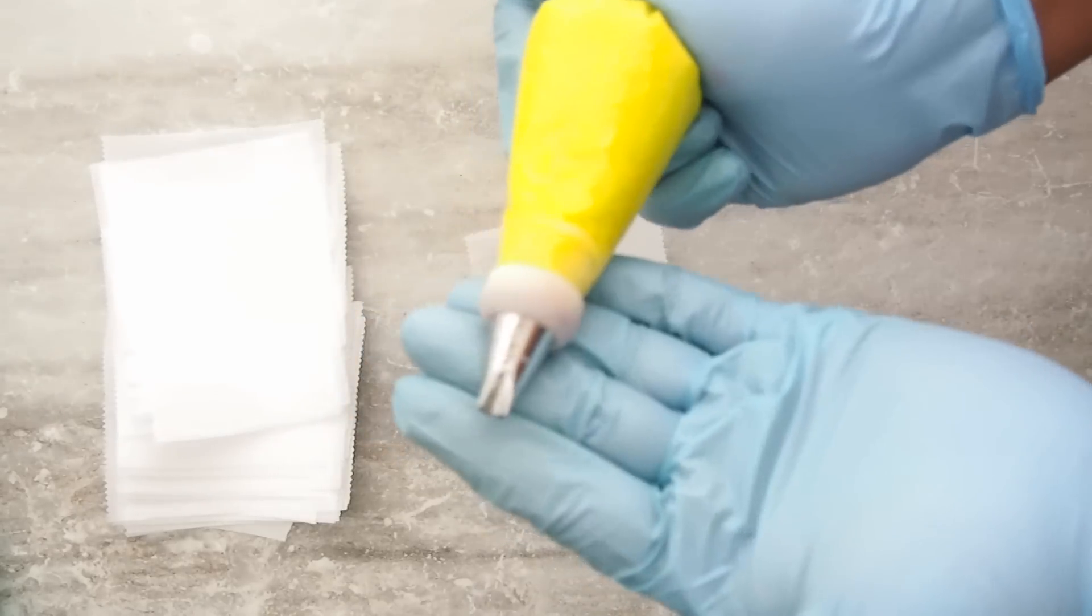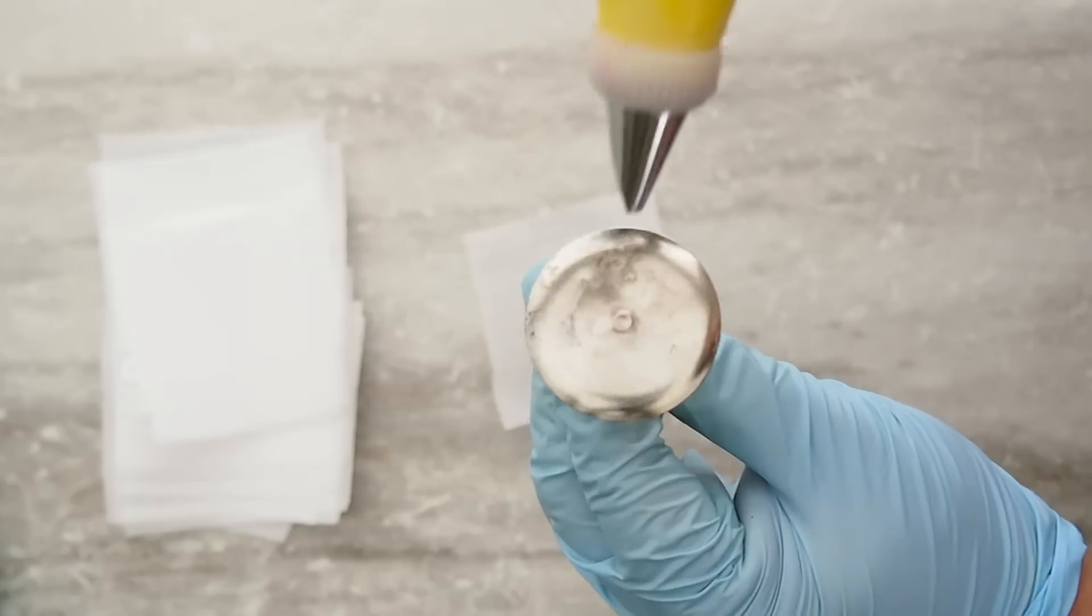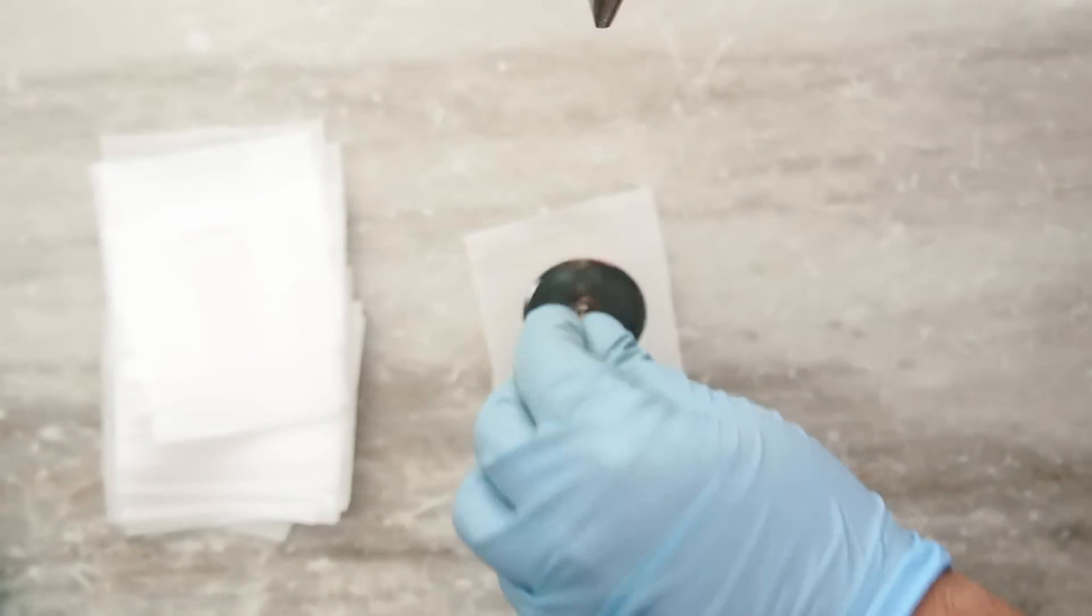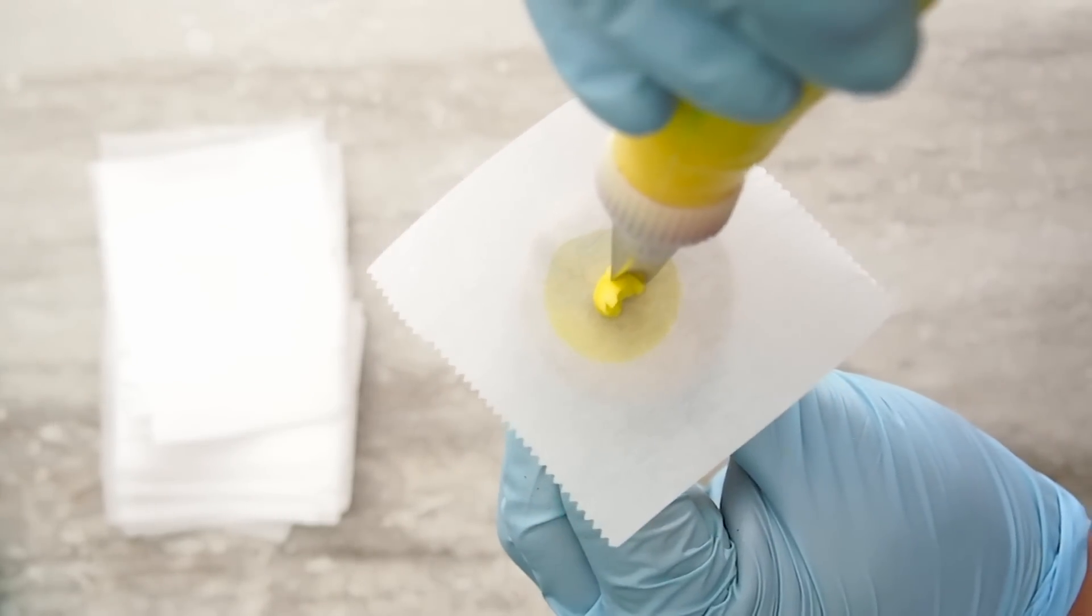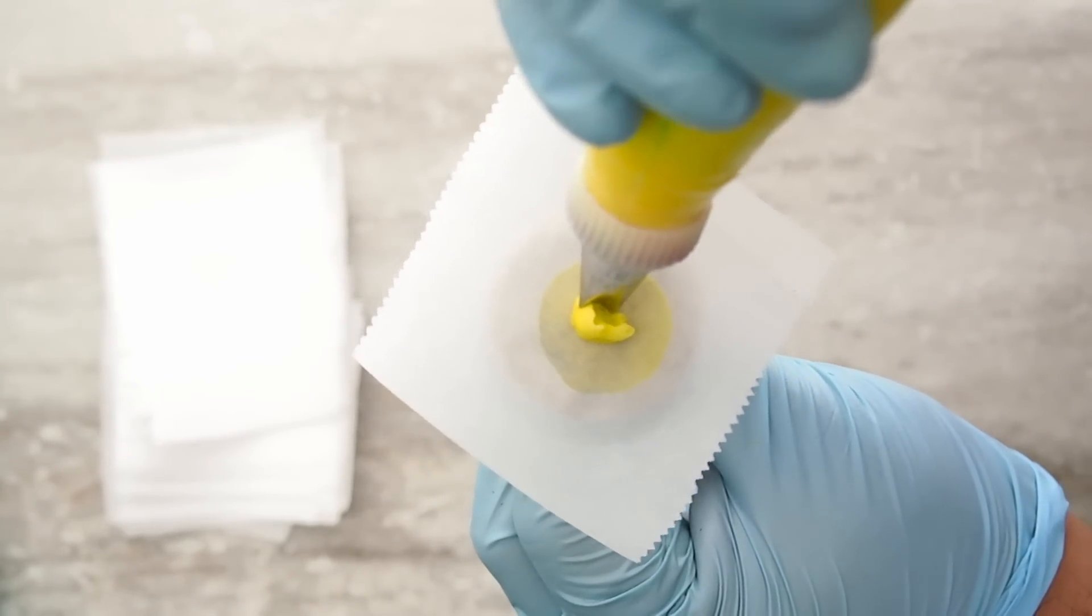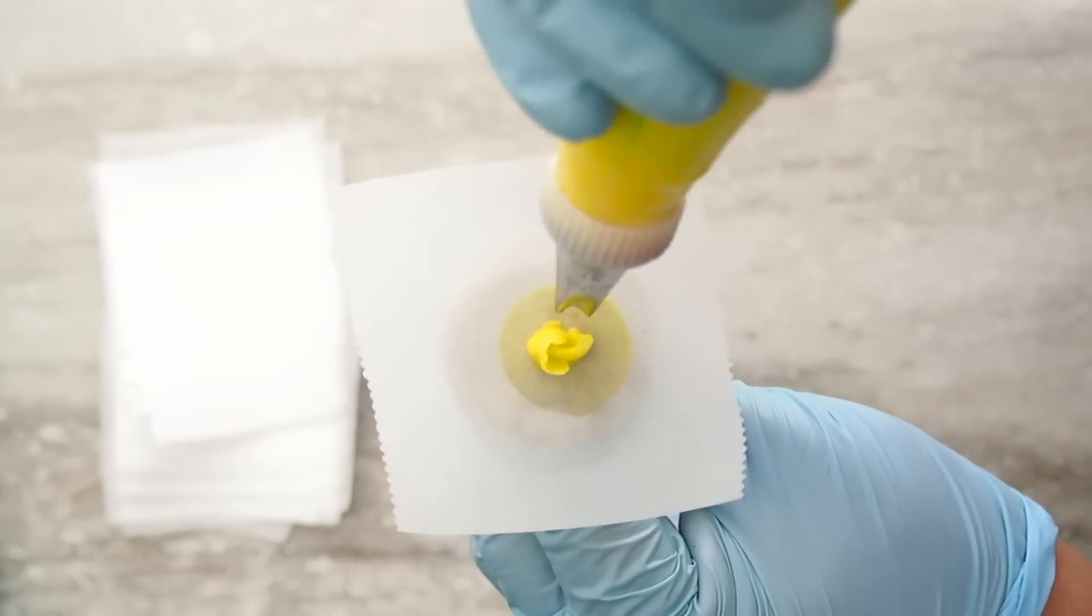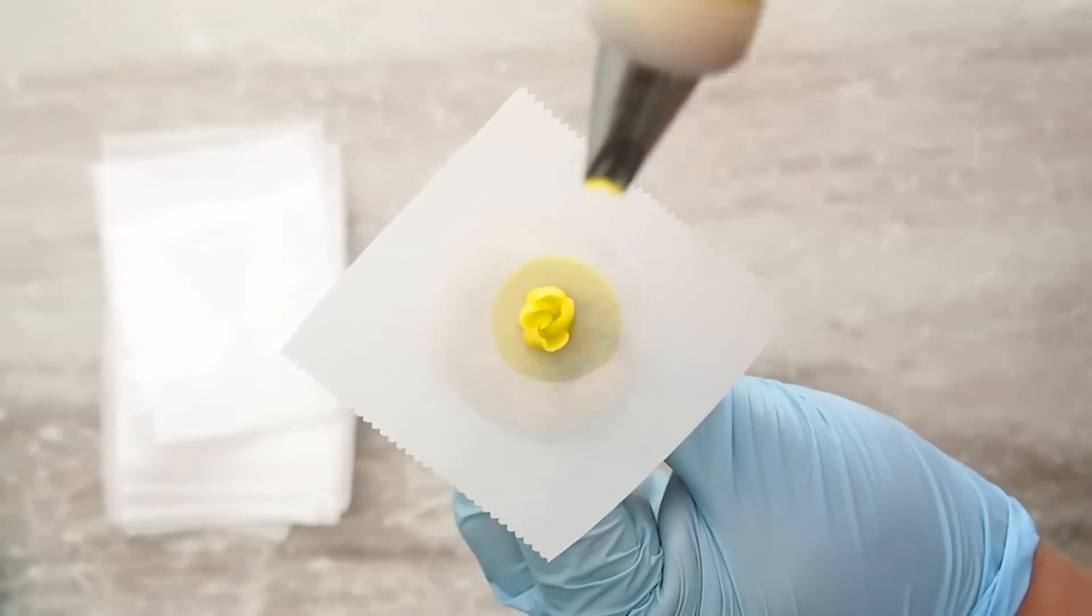So now I'm grabbing a number 81 tip in a canary yellow. And the way I made the canary yellow is that I used some lemon yellow with an itty-bitty little eeny-teeny itty-bitty short shorts. No, just kidding. An itty-bitty dot of leaf green.